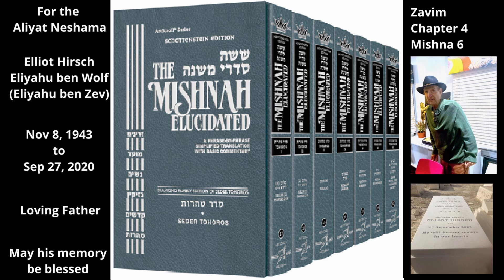The stringencies of a corpse over a Zav are that a corpse transmits Tumah through Ohel, and that it transmits Tumah for seven days. But a Zav does not transmit Tumah in these ways.